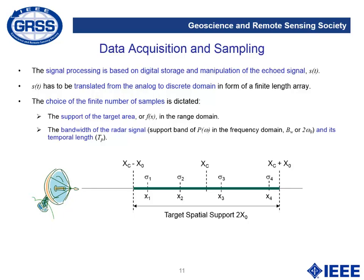Let's move to data acquisition and sampling. Signal processing is based on digital storage and manipulation of the echoed signal. What we receive from our radar has to be translated from the analog to the discrete domain in the form of a finite-length array. The choice of the finite number of samples is dictated first by the support of the target area — the extension of the area containing the scatterers or targets we want to characterize.